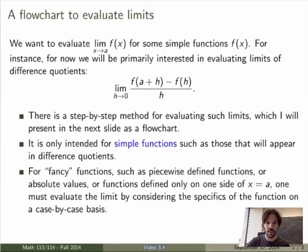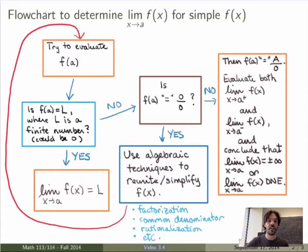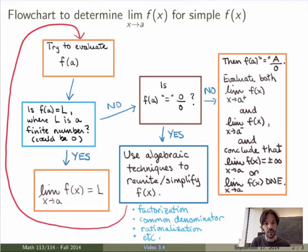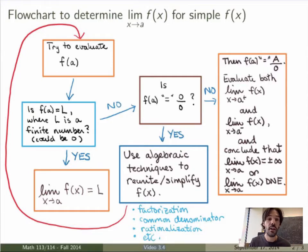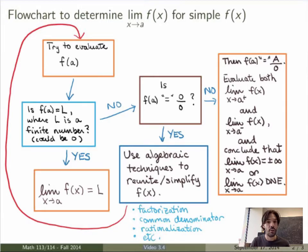So let's look at this flowchart. Suppose you want to evaluate the limit of a function f as x goes to a, and the function is simple enough that you can use this flowchart. The first step you should do is just try to evaluate the function itself at x equals a and see what you get.